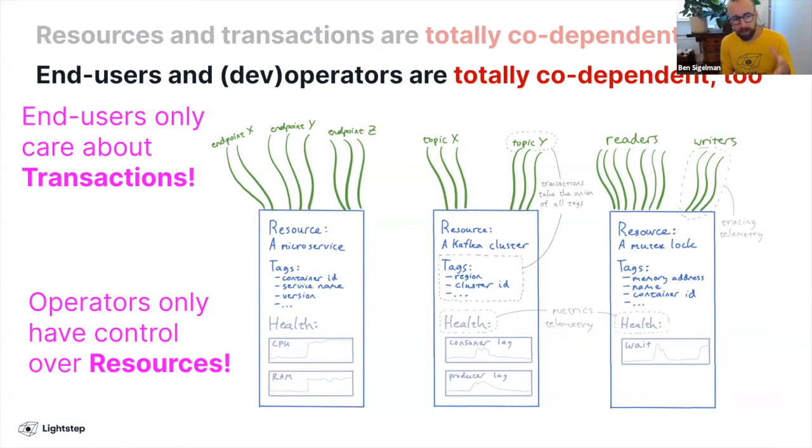If you couple that with a vast amount of data, this is why observability ends up being both really interesting and really difficult—because of these dual purposes.